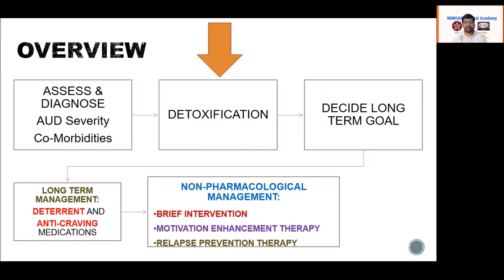When a case of alcohol withdrawal comes in, there are three objectives to the assessment. One is to assess the problem — whether there is alcohol dependence or simply non-dependent drinking. Second, whether there is any comorbid psychiatric or physical illness or other substance use complicating the picture. Third, define the severity of the alcohol dependence — mild, moderate, or severe.